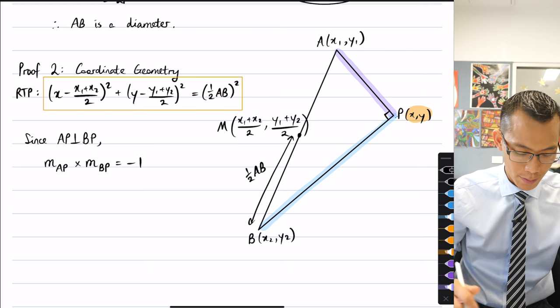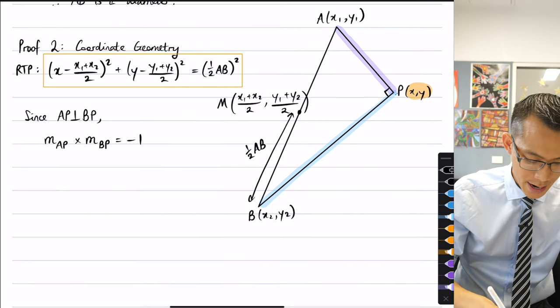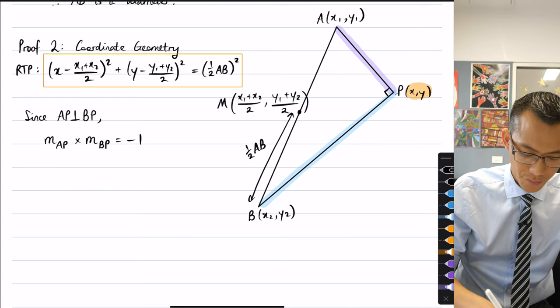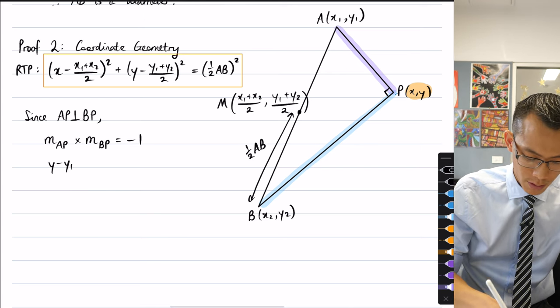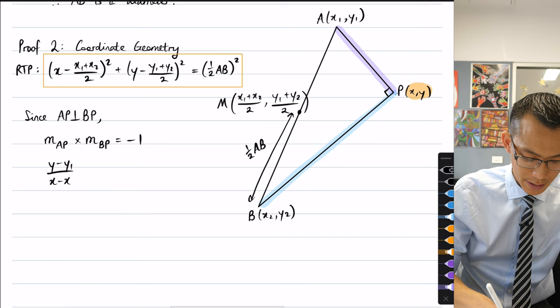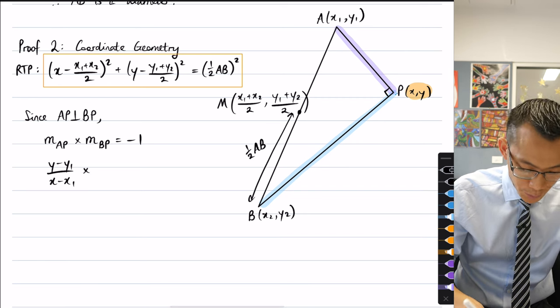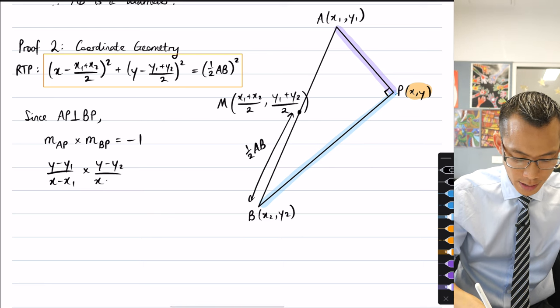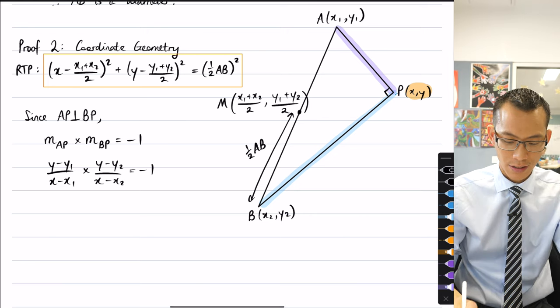So hopefully, if you remember your gradient formula, you can say that you've got rise over run, so it should be (y minus y1) over (x minus x1) multiplied by (y minus y2) over (x minus x2). That's all equal to negative one.